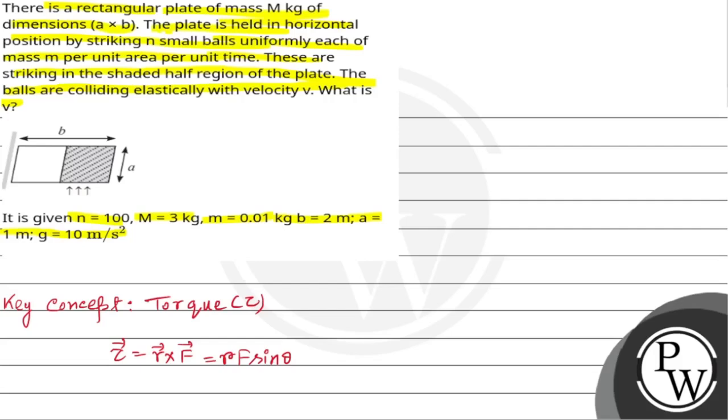Suppose in time t, capital N number of balls are striking the area capital A. So capital A is the total area of the shaded half region of the plate. So in unit time, the number of balls which are striking unit area of the shaded region is capital N by A into t, which is equal to small n according to question. So capital N equals to n into A into t.